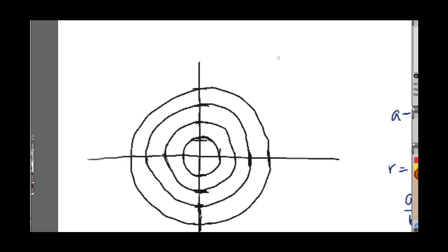So for instance the point 1 comma pi over 4 would be right here because in the theta of pi over 4 direction we went out one circle radius.